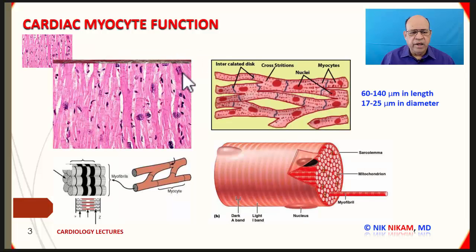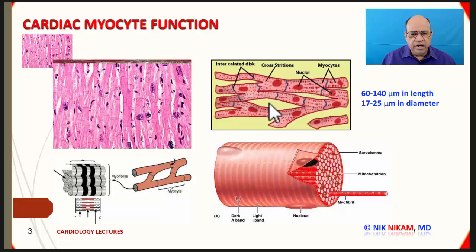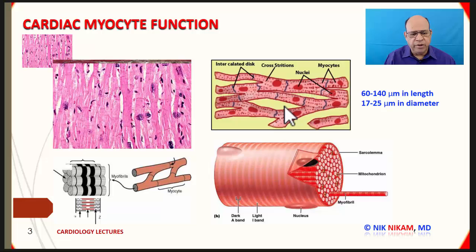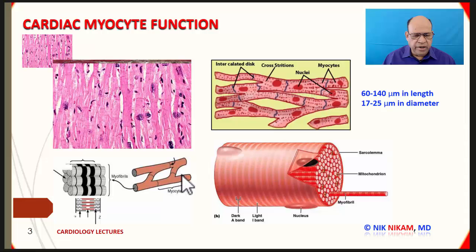If we look at the microscopic picture of the myocardium, we will see these branching cells which connect with each other. There is the nucleus, and between these branching cells we have these discs that connect adjacent cells — these are called the intercalated discs. They facilitate the transmission of the electrical impulse which generates the action potential, activating the entire ventricle instantaneously. Here is a better representation of the branches from the myocytes and the intercalated discs that connect cells in adjacent regions.